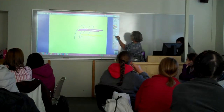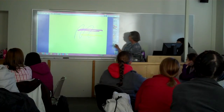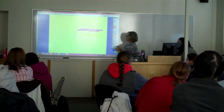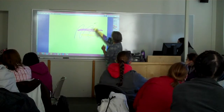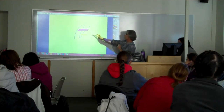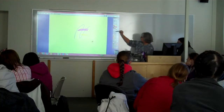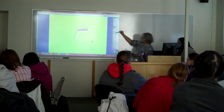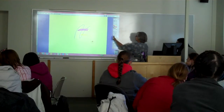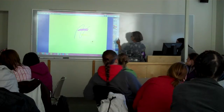The eraser is right here. It really kind of makes sense when you can look at this closely — they look exactly like what they are in real life. And then you can erase like that. So you've got your select tool, your pen, your highlighter, and your eraser.